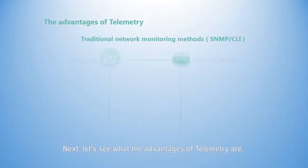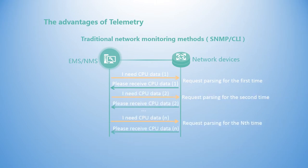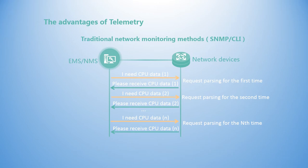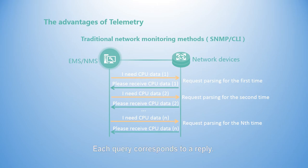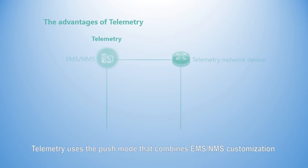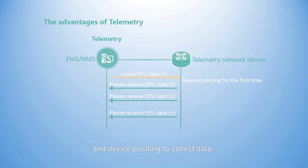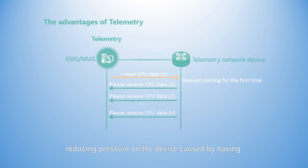Next, let's see what the advantages of telemetry are when compared with traditional network monitoring methods. First, traditional network monitoring methods such as SNMP and CLI use the pull mode — combining EMS or NMS query and device reply to collect data. Each query corresponds to a reply, and the device needs to process a large number of repetitive query packets. In comparison, telemetry uses a push mode that combines EMS or NMS customization and device pushing to collect data, where each customization corresponds to multiple replies, reducing pressure on the device.